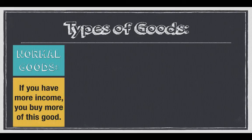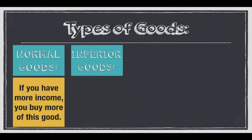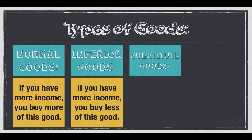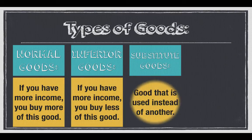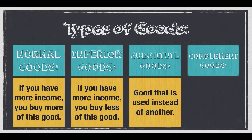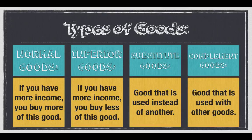We have four types of goods: normal goods — things that are name brand; inferior goods — things that are not name brand; substitute goods — things that can be used in place of another; and complement goods — things that usually go well with something else.